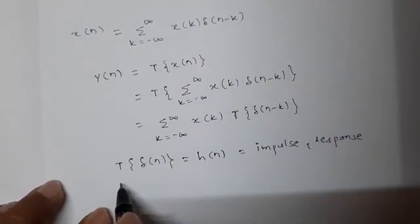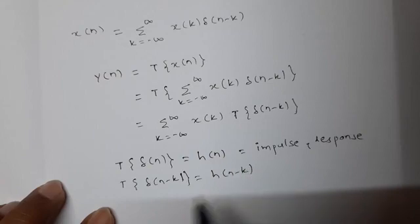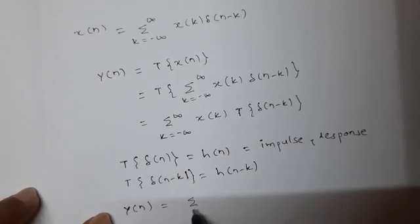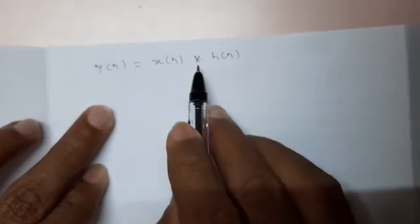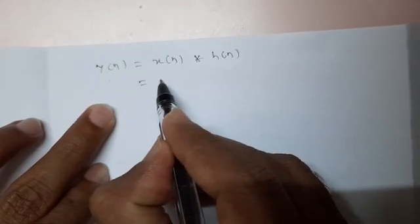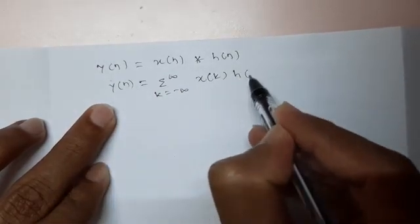Now, since this system is a time invariant system, T{δ(n-k)} becomes h(n-k), meaning an identical shift at both the input and output side. So y(n) can be written as summation from k = -∞ to +∞ of x(k) times h(n-k), which produces an important equation called the convolution sum: y(n) = x(n) * h(n), where * is the convolution operator. This means x(n) convolved with h(n) equals summation from k = -∞ to +∞ of x(k)h(n-k).